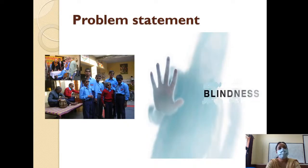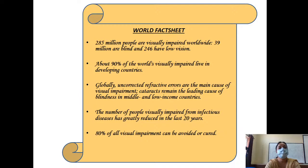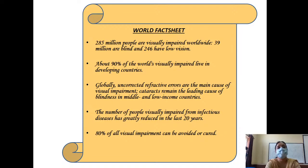You can begin by describing the problem statement - how much is the burden of the problem in the world, in developing countries, in India. If you look at the WHO fact sheet, there are about 285 million people who are visually impaired, of whom 39 million are blind and 246 million have low vision. It is a huge problem, and about 90 percent of the visually impaired people live in developing countries.